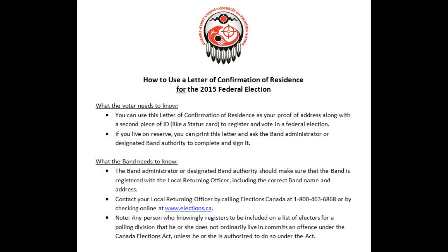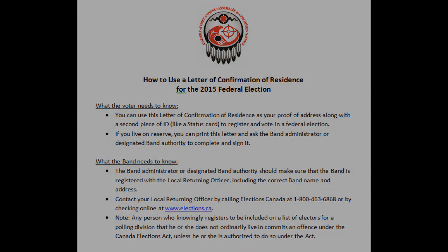The first page tells you how to use the letter of confirmation for both the voter and the band. As a voter, you can use this letter along with another piece of ID with your name on it, like a status card, in order to vote. The letter has to be signed by the band administrator or an authority designated by the band. You can either print the template letter yourself or your band can fill one out for each voting member.